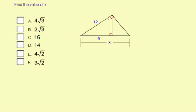The information given: 9 is the long leg of the medium right triangle, and 12 is the hypotenuse of the medium-sized right triangle. This 12 also represents the long leg of the largest right triangle.